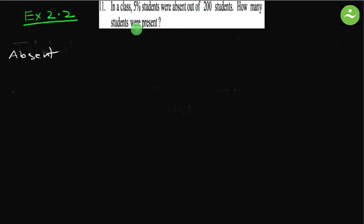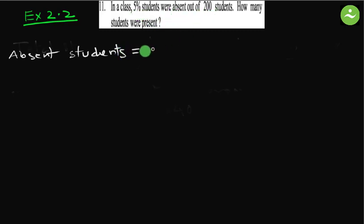This is very easy. If we know the number of absent students, we can find out how many students were present. Absent students equals five percent of 200.